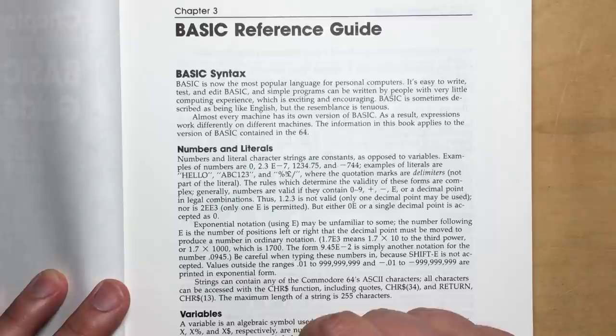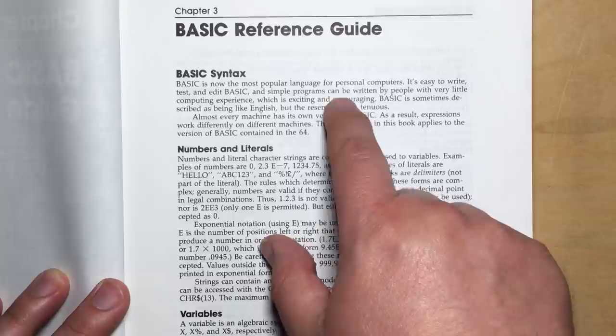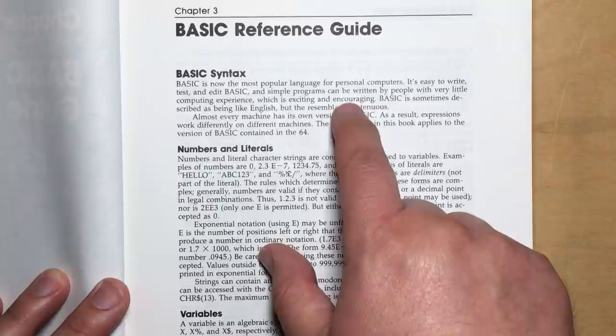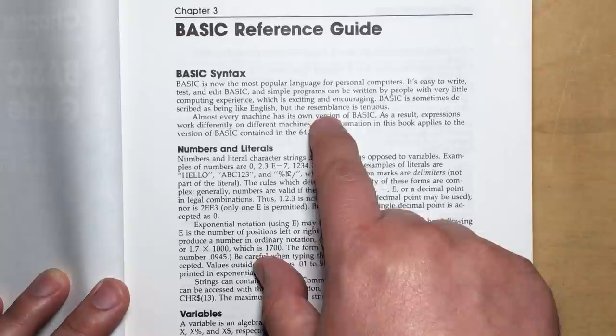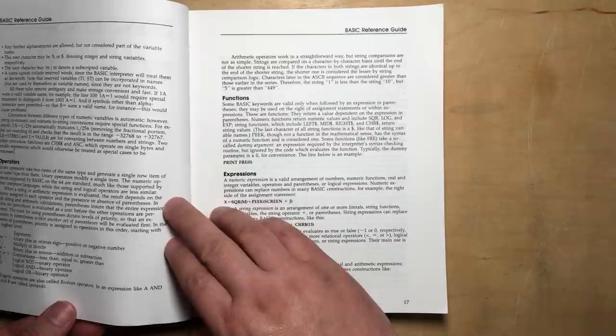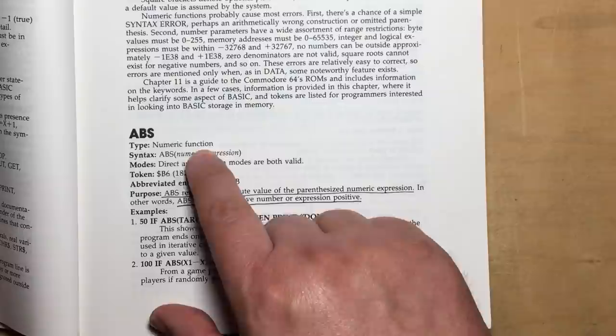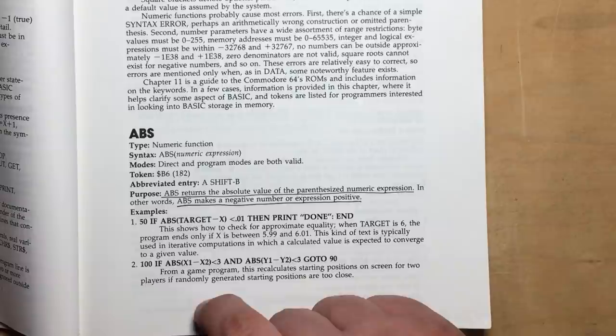Basic reference guide. This is a big one. Basic syntax. I love this: Basic is now the most popular language for personal computers. It's easy to write, test, and edit basic, and simple programs can be written by people with very little computing experience, which is exciting and encouraging. Basic is sometimes described as being like English, but the resemblance is tenuous. That reminds me of the claims of COBOL that I briefly examined in that recent video. There's excellent information for the beginning basic programmer here. A lot of this of course is covered in the Programmer's Reference Guide, but this is another take on it.